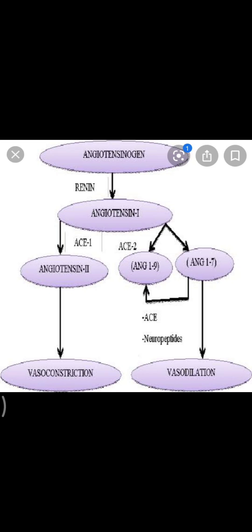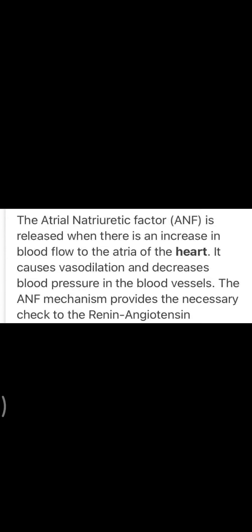Angiotensin 2 is a powerful vasoconstrictor that increases glomerular blood pressure, bringing GFR back to normal. Angiotensin 2 also activates the adrenal cortex to release aldosterone, which causes reabsorption of sodium ions and water from the DCT. As a result, blood pressure increases, leading to an increase in GFR. This is known as the renin-angiotensin mechanism.